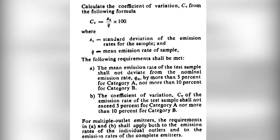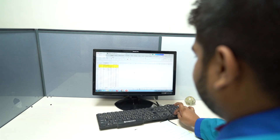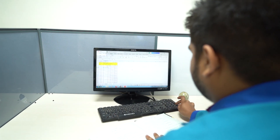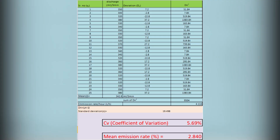Now let's discuss the requirements that must be met. The mean emission rate of the test sample should not deviate from the nominal emission rate by more than 5% for Category A and not more than 10% for Category B emitters. Additionally, the coefficient of variation, Cv, for the emission rate must not exceed 5% for Category A and 10% for Category B.